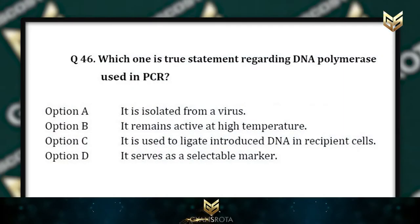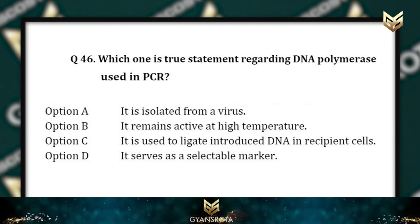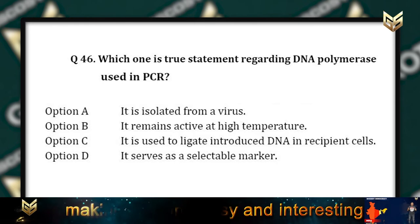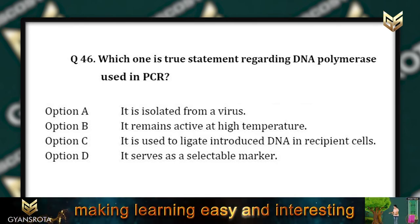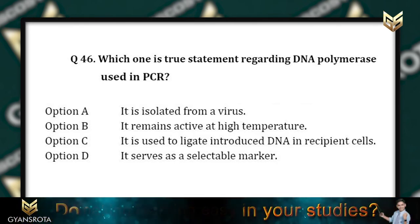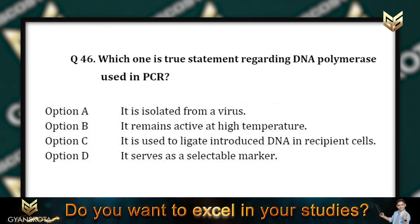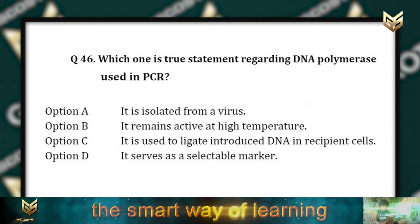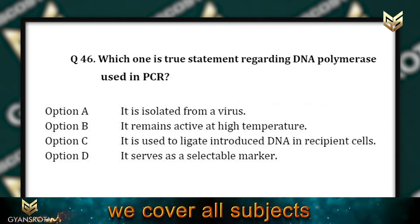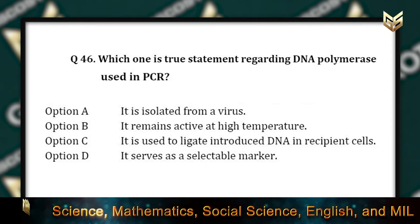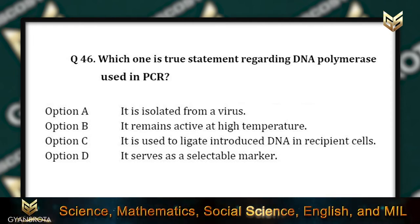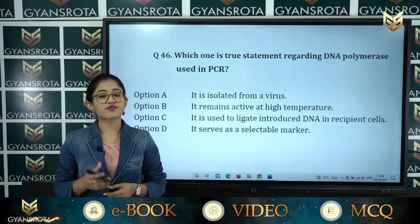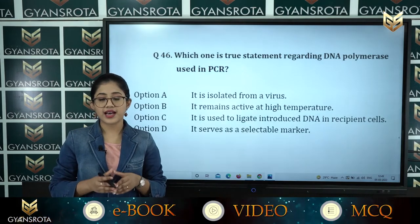Question 46: Which one is a true statement regarding DNA polymerase used in PCR? Option A: It is isolated from a virus. Option B: It remains active at high temperature. Option C: It is used to ligate and introduce DNA in recipient cells. Option D: It serves as a selectable marker. This is from Biotechnology: Principles and Processes.